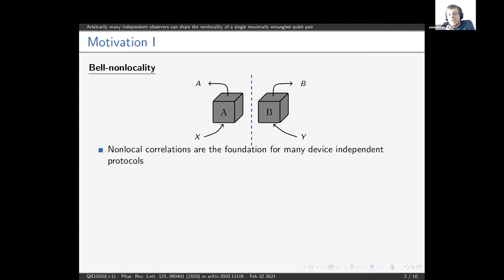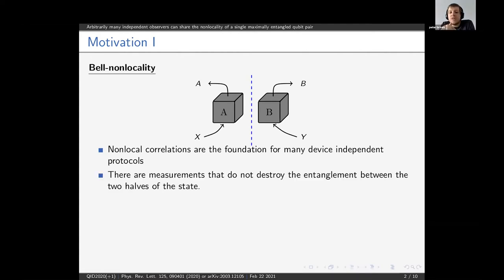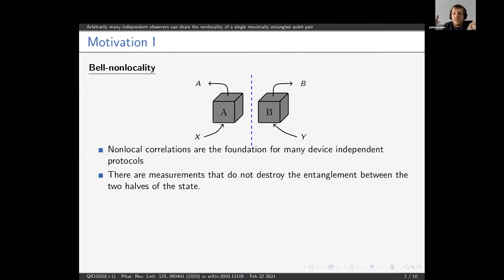Typically we just assume that the state is either destroyed during the measurements or we just throw it away, and the next time we want to generate some more correlations we send in another fresh entangled state. However, we know that there are measurements that don't destroy the entanglement between the two halves of the state, and so you can imagine that we still have some entanglement if we perform those measurements — maybe that entanglement is still useful for violating again a Bell inequality or generating more non-local correlations.